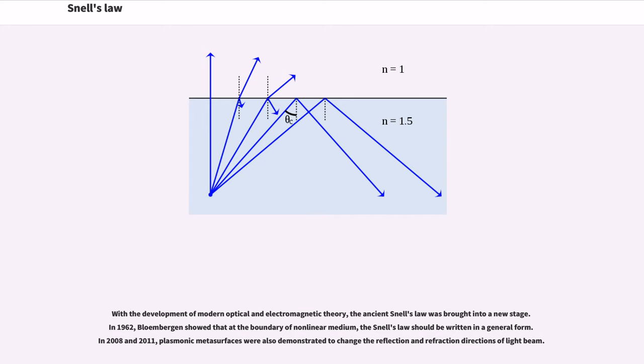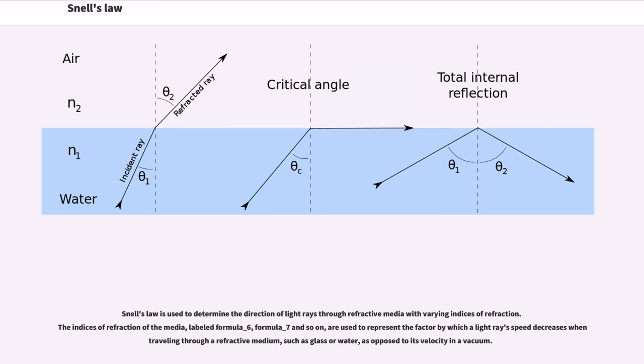With the development of modern optical and electromagnetic theory, the ancient Snell's law was brought into a new stage. In 1962, Bloembergen showed that at the boundary of nonlinear medium, Snell's law should be written in a general form. In 2008 and 2011, plasmonic metasurfaces were also demonstrated to change the reflection and refraction directions of light beams.